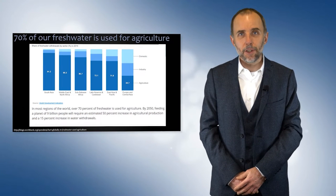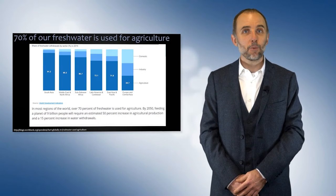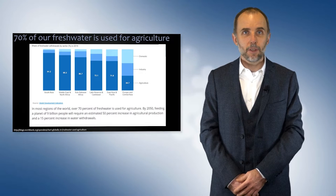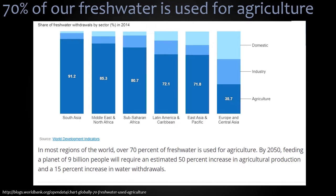Our agriculture is very demanding of our freshwater resources — 70% of our freshwater is used for agriculture. This graph shows the different consumption rates in different regions of the world. Over 70% of freshwater going to agriculture is a large proportion, so there are increasing demands and competition between agriculture, industry, and other uses.